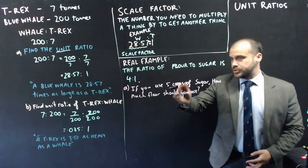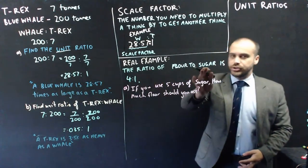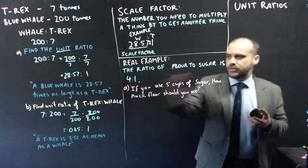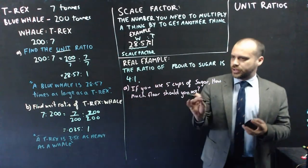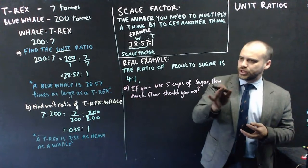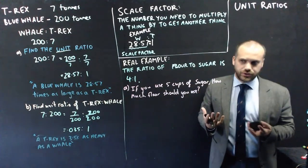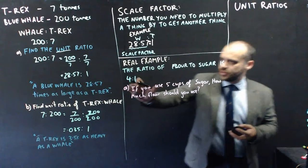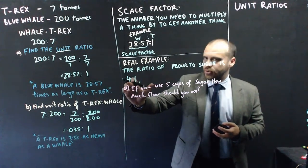So, here's our question. The ratio of flour to sugar in some recipe is 4 is to 1. If you use 5 cups of sugar, how much flour should you use? This is a really good example of the use of a scale factor. This is our scale factor, 4.